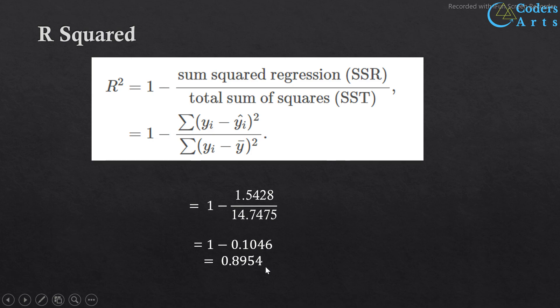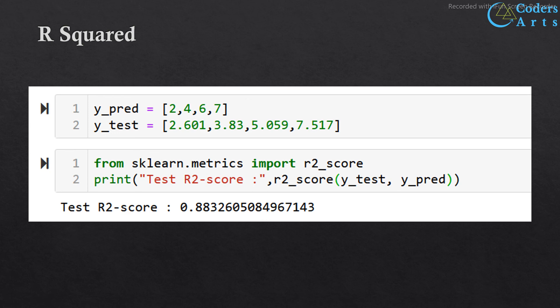To calculate R-squared in Python, I first import the library and then calculate the R-squared score. The R-squared score is 0.8832 — it is not exact but very similar to what we calculated manually. That's it for today, thank you.